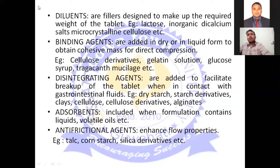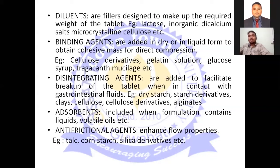Next are the binding agents. For the preparation of a tablet, binding agents are required to adhere each granule together. They are added in dry or liquid form to obtain a cohesive mass. For direct compression we use dry binding agents, and for wet granulation we use liquid binding agents. Examples are cellulose derivatives, gelatin solution, glucose syrup, and starch mucilage.